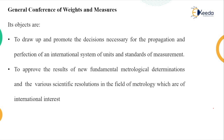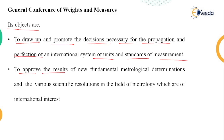The General Conference of Weights and Measures has two main objectives. First, to draw up and promote the decisions necessary for the propagation and perfection of an international system of units and standards of measurement. Second, to approve the results of new fundamental metrological determinations and various scientific resolutions in the field of metrology which are of international interest.